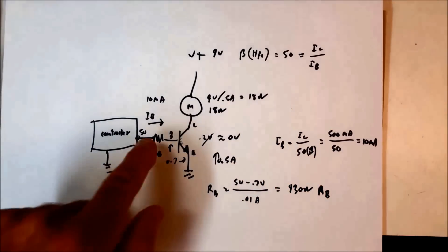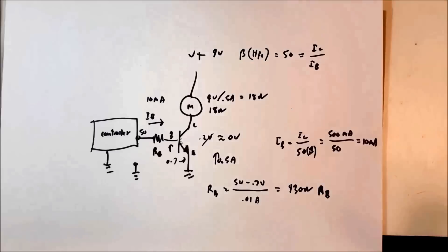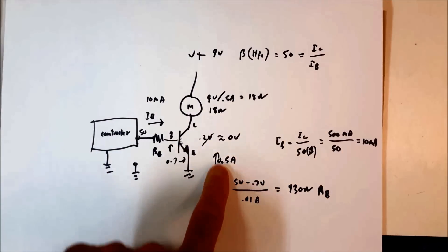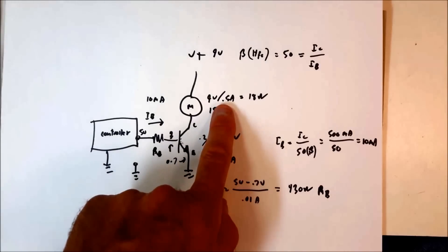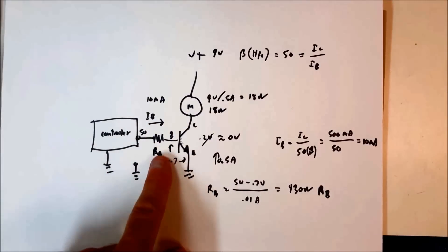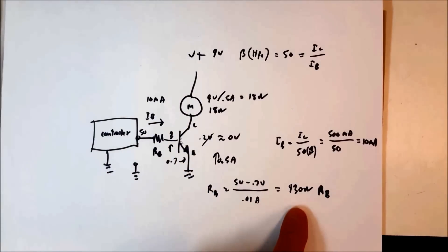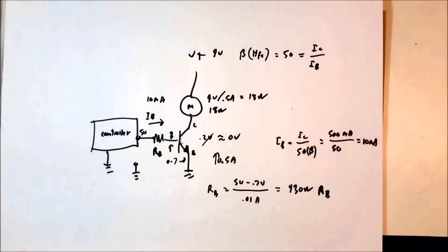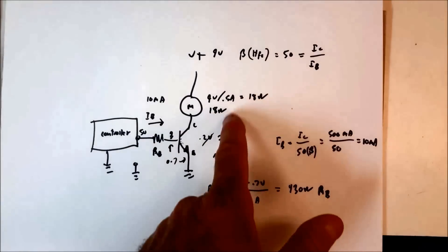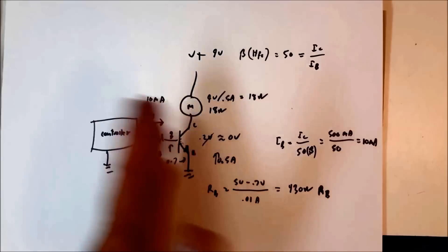So 430 ohms is the resistance we need in order to have a collector-emitter current of 500 milliamps with 10 milliamps in the base. To get this 10 milliamps, we need an R_B of 430 ohms if we're going to use 5 volts to drive the transistor on and off. This is one thing you may have to do to solve a BJT problem: work from the load you've got to drive and work back.